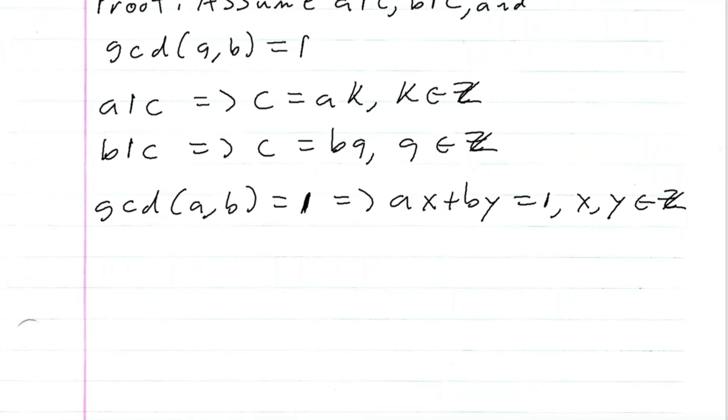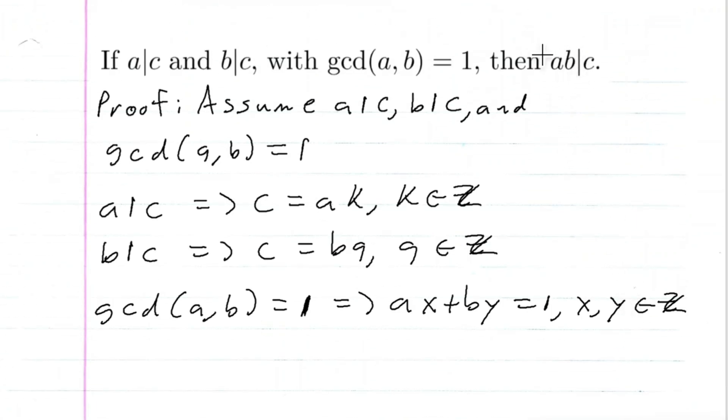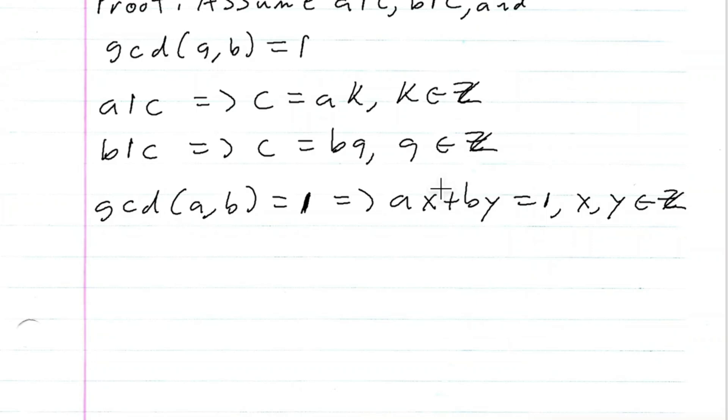All right, so what I want, remember, I want AB divides C, so out of this expression, I want to get A and B together. And the way I can do that is, first I need C, so I can multiply both sides of this equation by C. So this implies that ACX plus BCY is equal to C.